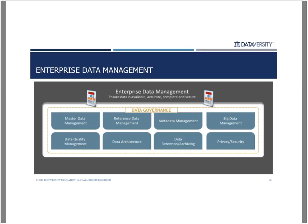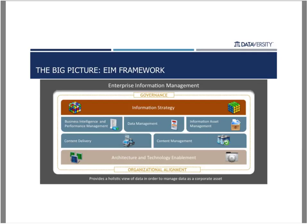This is the link between data management and data governance, which will be explored in more detail in the last module of this series. At the next level, the big picture is enterprise information management. An enterprise information management program ensures that data as well as aggregated and derived data — also known as information — is managed consistently across the enterprise and in a way that ensures it is a corporate asset, whether in the form of reporting, analytics, documentation, or other content.